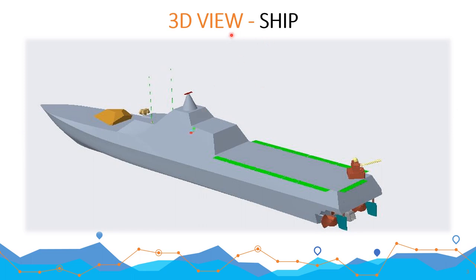Looking at this 3D view of a ship, you can see some things like a small gun, a mast, the hull, and the propeller, but you are unable to know what's inside the ship — what facilities and equipment are present inside. That's why the general arrangement plan plays a very important role.